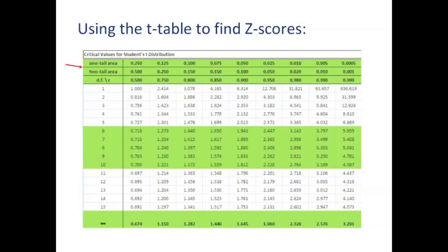The first thing I want you to note is that in hypothesis testing, we don't use that third level — that degrees of freedom and confidence row. We use one-tailed area and two-tailed area. So the first thing you're going to need to know to find this Z-score is whether it's a two-tailed or a one-tailed test. Depending on what it is, you've got to go to the right line.